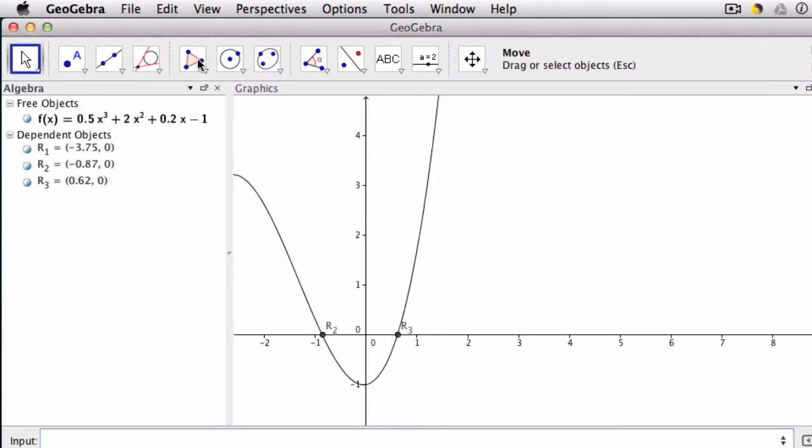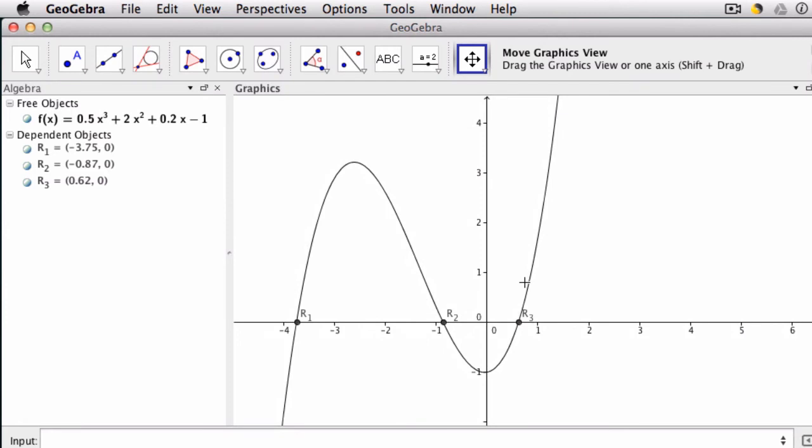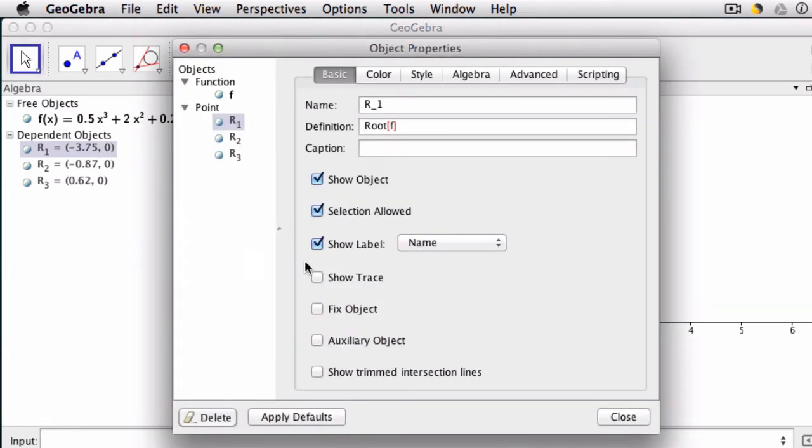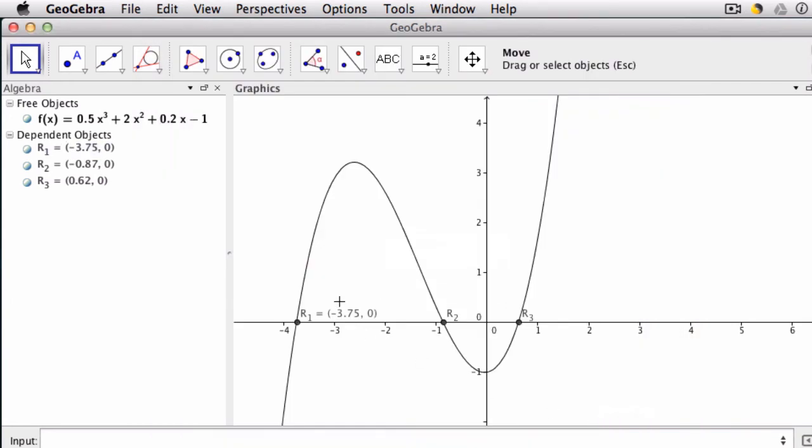When we type in the root of f, what are we doing? We're calculating all the roots of the function. And notice that it actually places them right out. And it even gives them indexes. So root 1, root 2, and root 3. And you can find their exact value by clicking on them, go into object properties, and display the name and value of that point. Or you can see it over here in the algebra window.